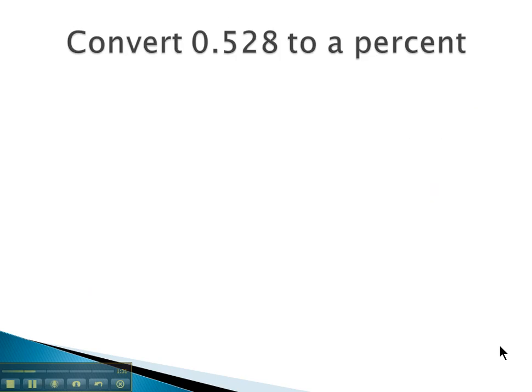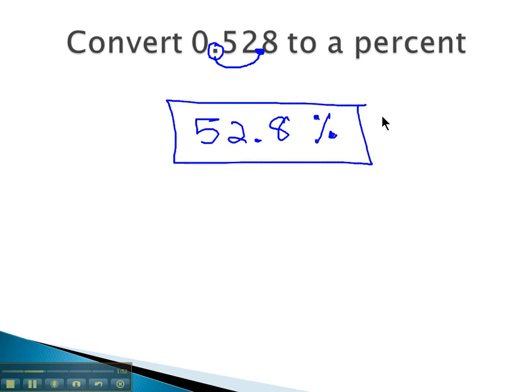So for example, if we've got this number 0.528, and we want to convert it to a percent, percents are larger. So we need to move that decimal twice to the right. When we do, we get 52.8, and we use the little percent symbol that you're probably familiar with. 52.8 percent is the same as the decimal 0.528.